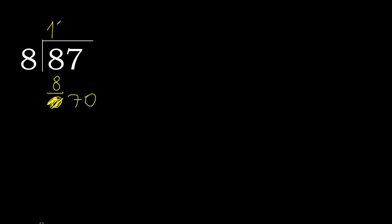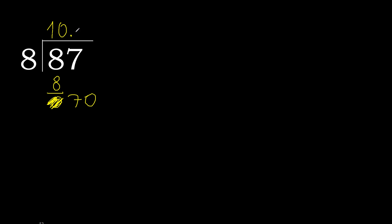Always complete with 0. Here, 0 point — 0 point because here there are 2 numbers. Bring down to get 70. 8 multiplied by 9 is greater. Multiplied by 8 is 64.